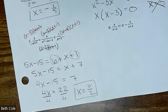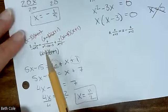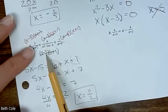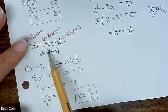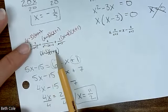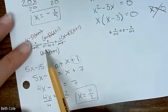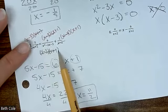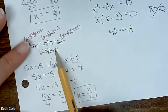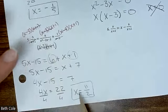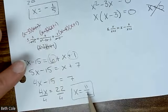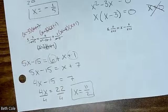Let's check it. Who were the troublemakers? There were two of them — three and negative one. We didn't get three or negative one though, so we're good.